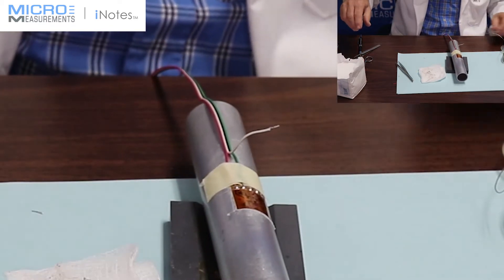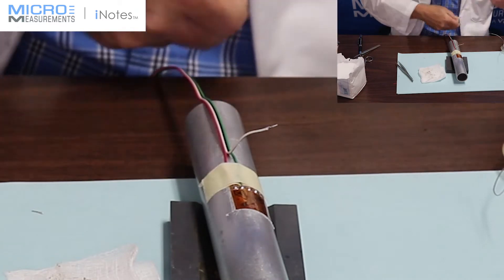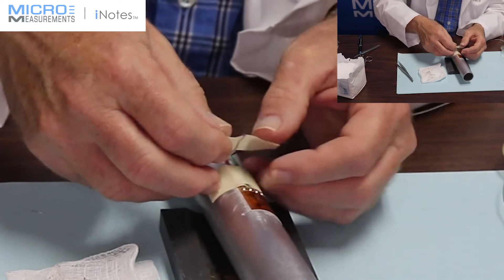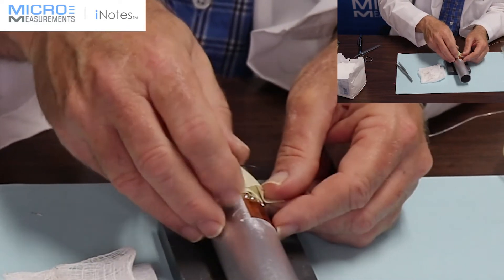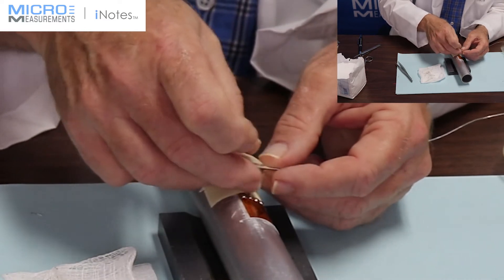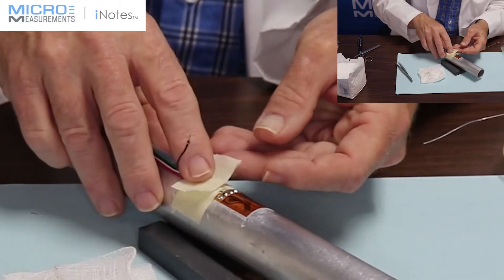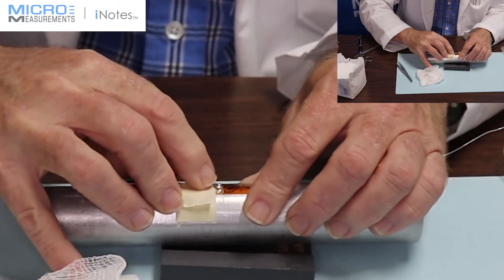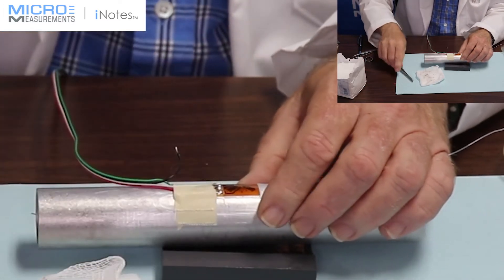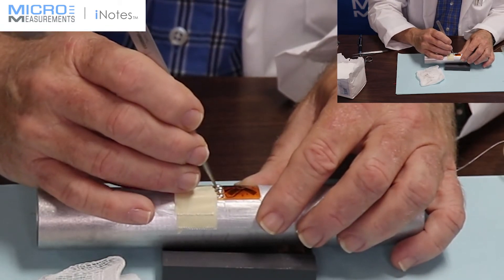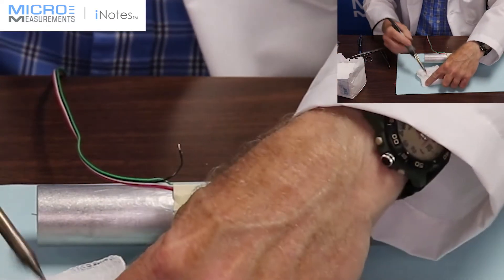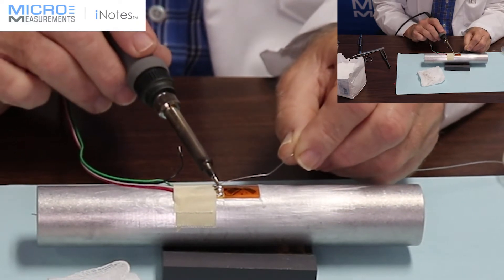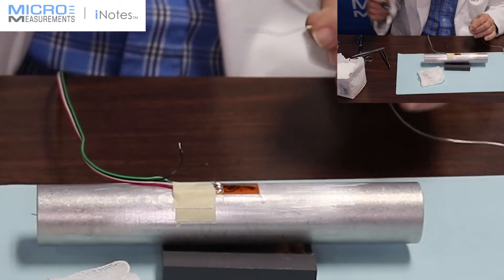The next one will be the S minus terminal, or signal minus. Again, using my pointed tweezers to align the wire over the top of the tab. Clean the tip, lightly tin the tip, place the solder in the target area, press firmly through until you add flash solder and flux.